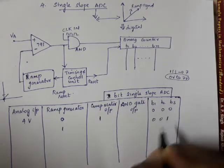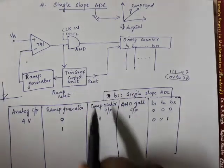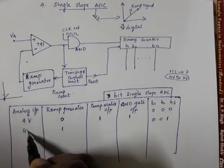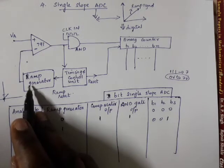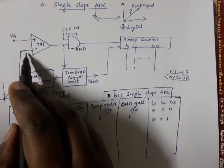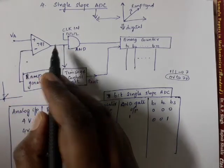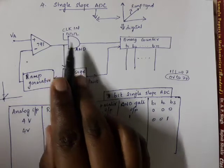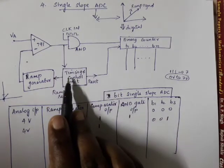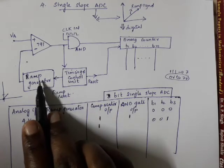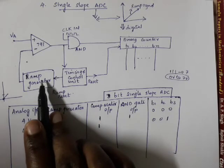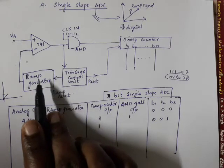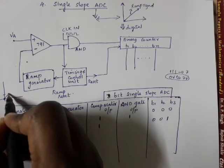The binary counter increments from 0 and starts counting. For the next clock cycle, the ramp goes from 1V to 2V. Since 4V minus 2V = 2V, the difference is still positive, so the comparator output remains high. The timing and control unit continues to signal the ramp generator, and the ramp signal increases further.